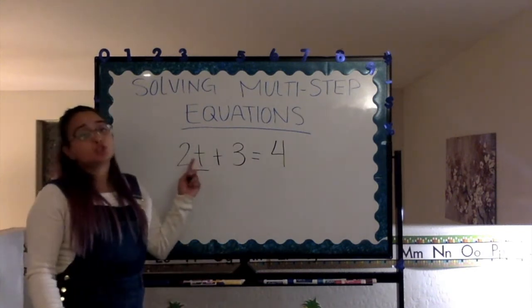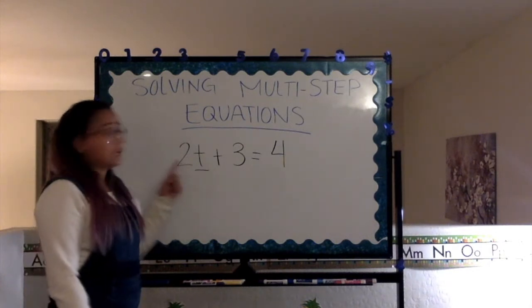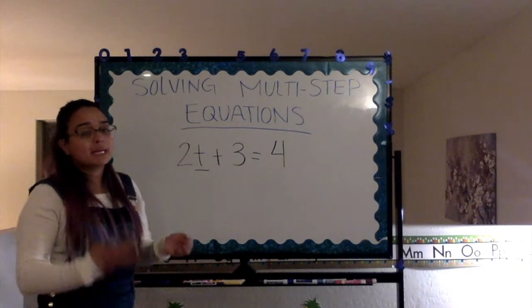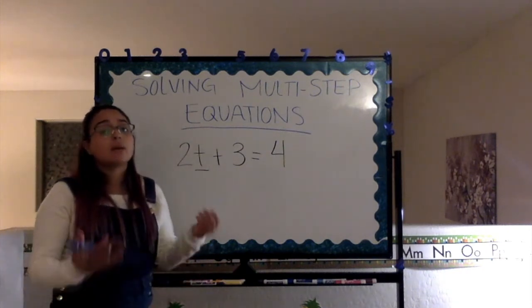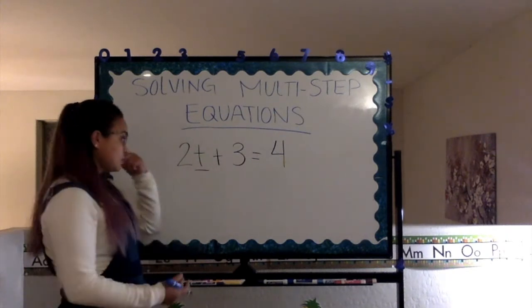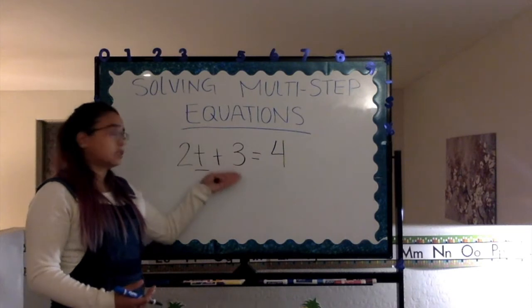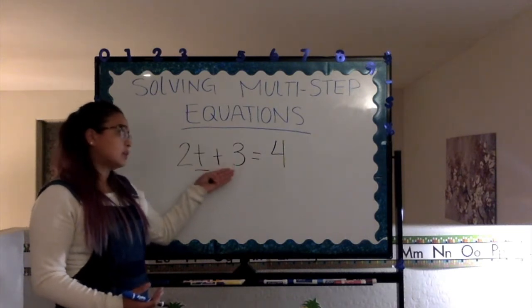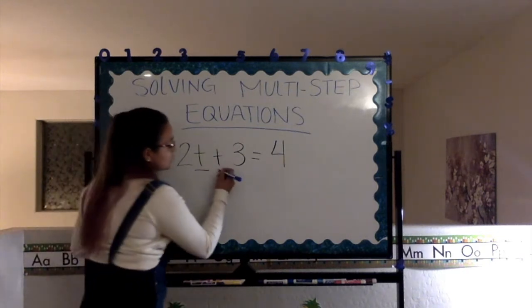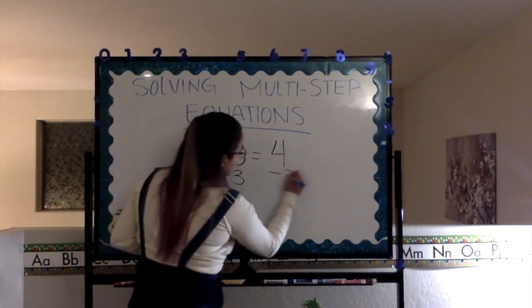So, we're going to be trying to solve or we're going to be solving the value of t. How are we going to be doing that? By getting t to be by itself on one side of the equal sign. So, it's already on this side of the equal sign. We're going to start off with the 3. We're going to get rid of it from this side and move it over here. To do that, we're going to subtract 3 to both sides.